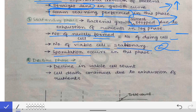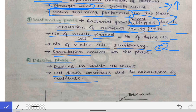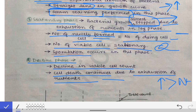In the decline phase, there is a decline in the viable cell count. Cell death continues due to exhaustion of nutrients. After the stationary phase, the number of dying cells overwhelms the number of newly formed cells because there are no nutrients left in the culture media. So the viable cell count decreases, but the total count remains the same.